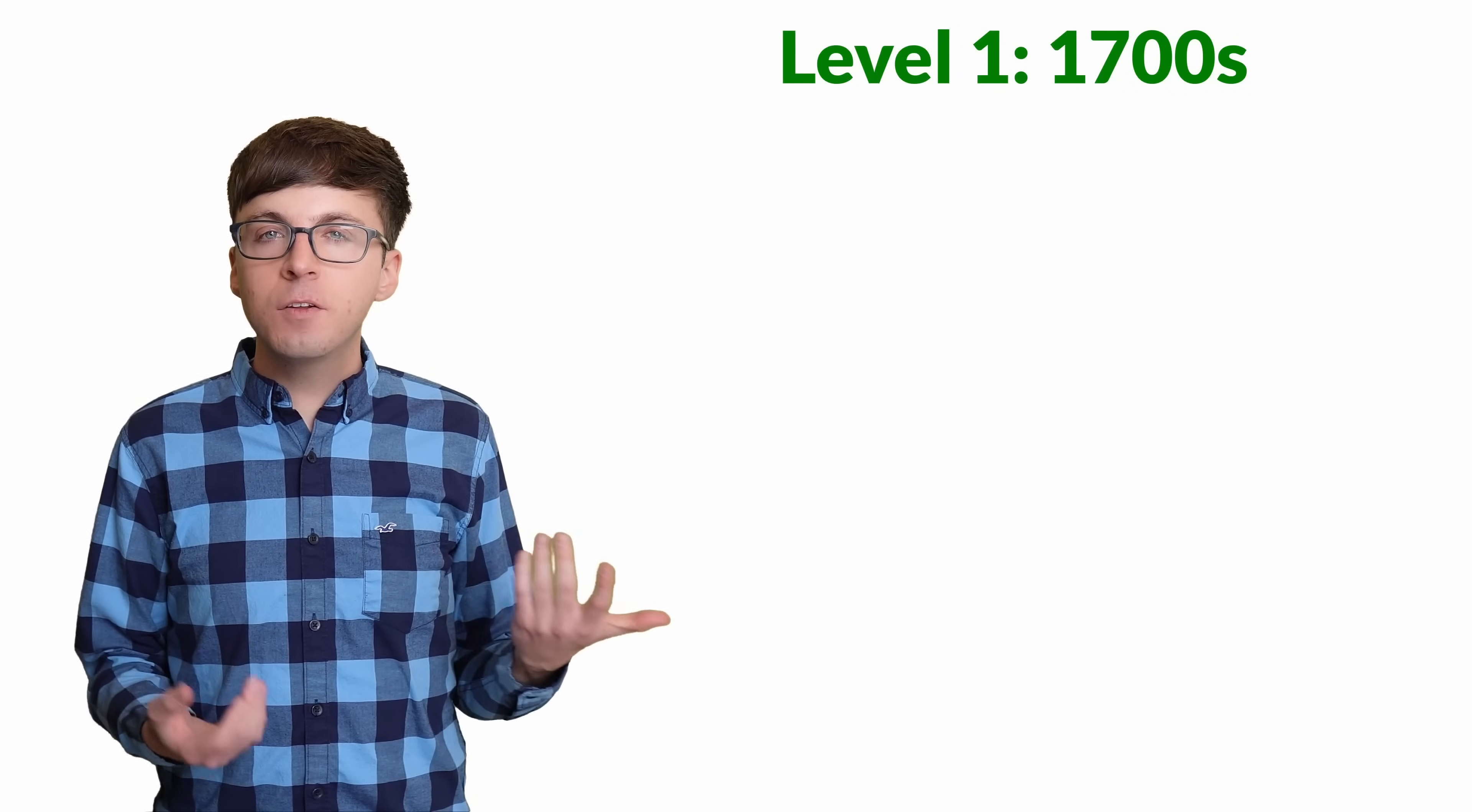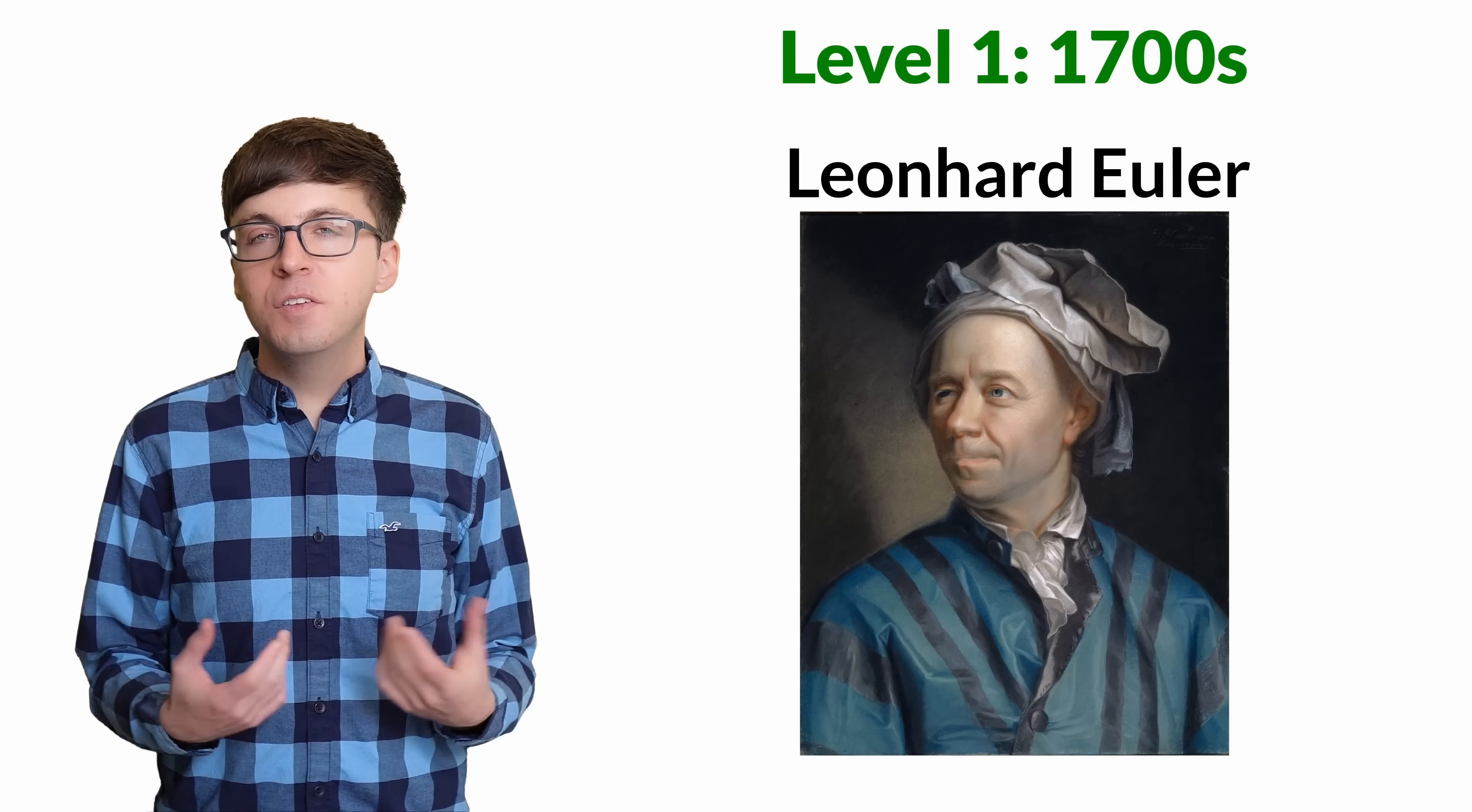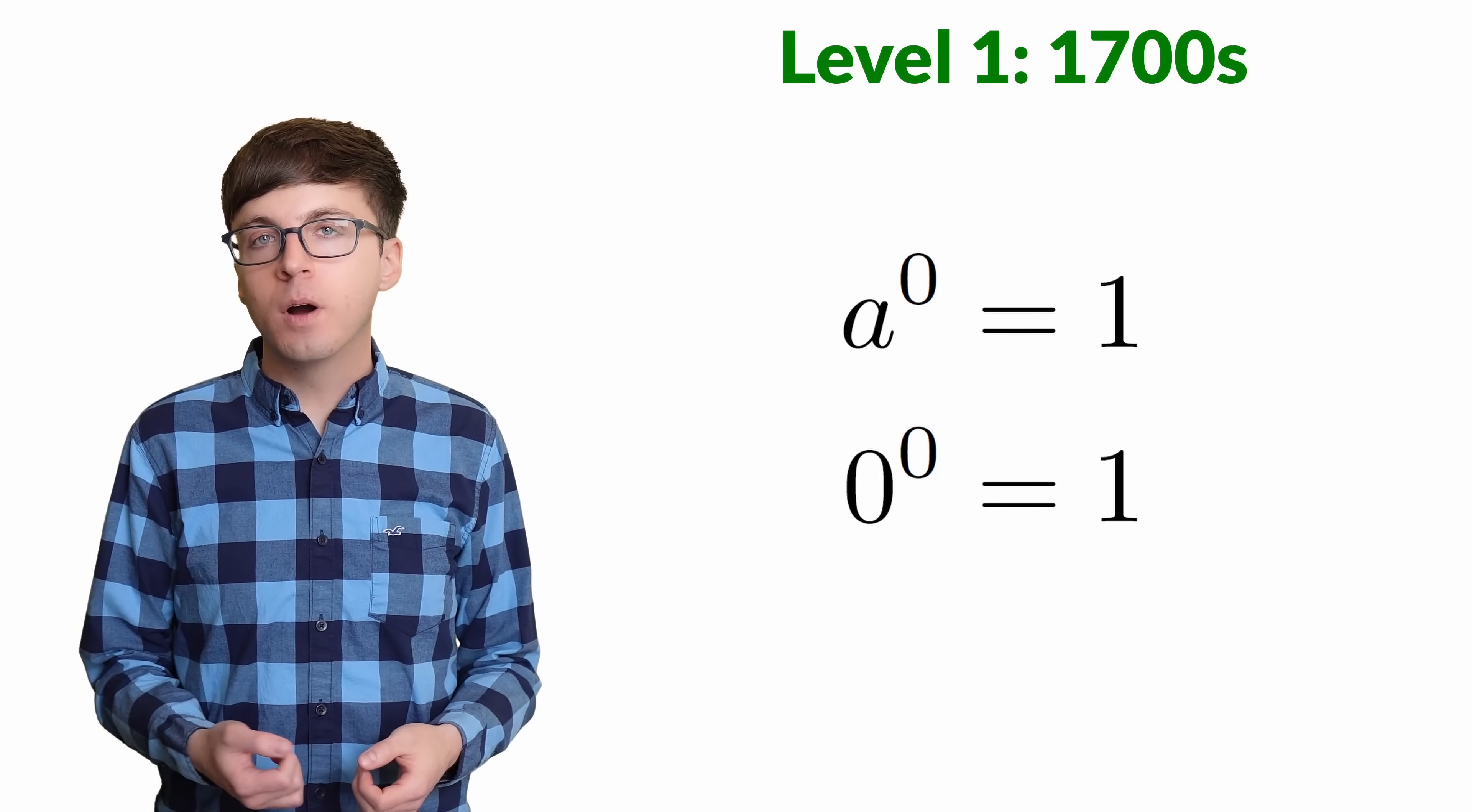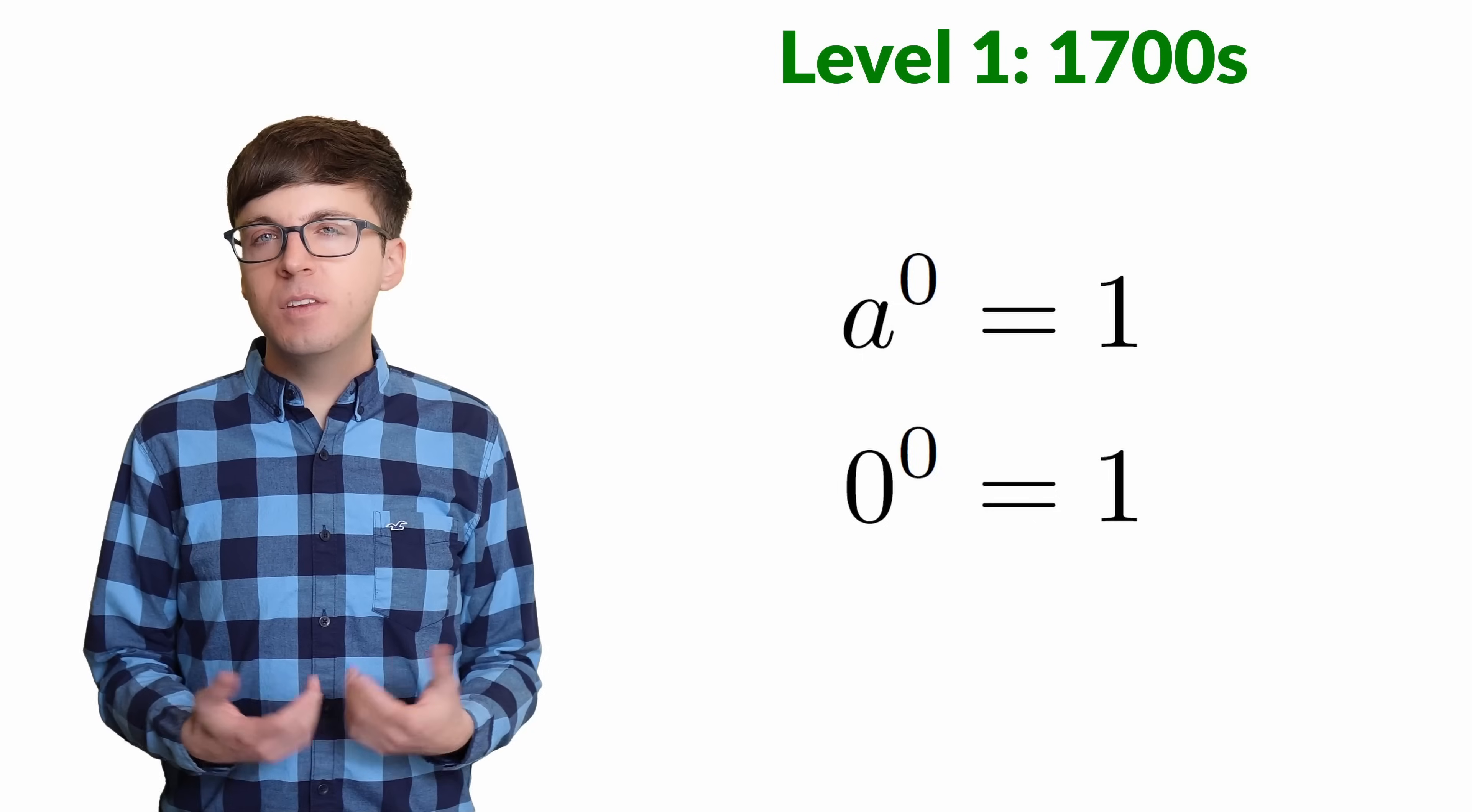For level one, let's look at how Euler, one of the greatest mathematicians in history, defined zero to the zero. In his book from 1752, he defined a to the zero equals one, and specifically mentioned that zero to the zero equals one. In the 1787 version of his book, Muscaroni added this justification. See what you think of it.